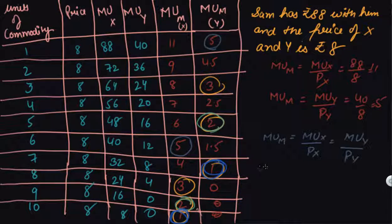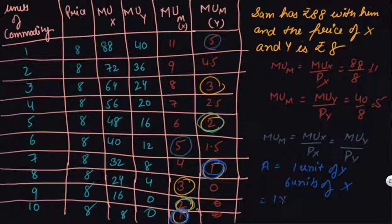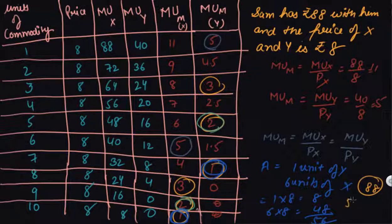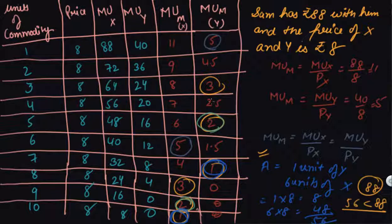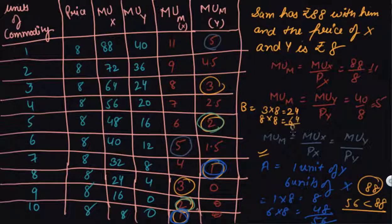These are the various points. Point A says the consumer should buy 1 unit of Y and 6 units of X. If he buys 1 unit of Y he pays 8 rupees, and if he buys 6 units of X he pays 48 rupees — that comes to 56 rupees. But he has 88 rupees with him, so 56 is less than 88. Should we opt for this option? No, because he has more options to go further.